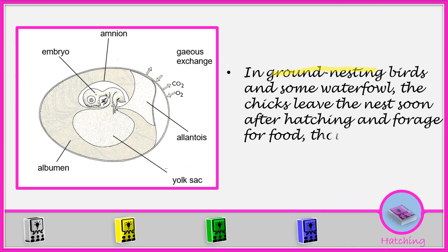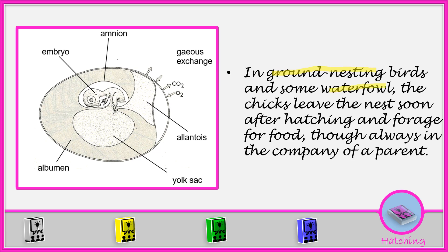In ground-nesting birds and some waterfowl, the chicks leave the nest soon after hatching and forage for food, though always in company of the parent. Those chicks brooded on the ground or in waterfowl will start moving around looking for food after hatching. But for those that are in trees, they don't move because they are still young — it is going to be the parents to look for the feeds and feed them.